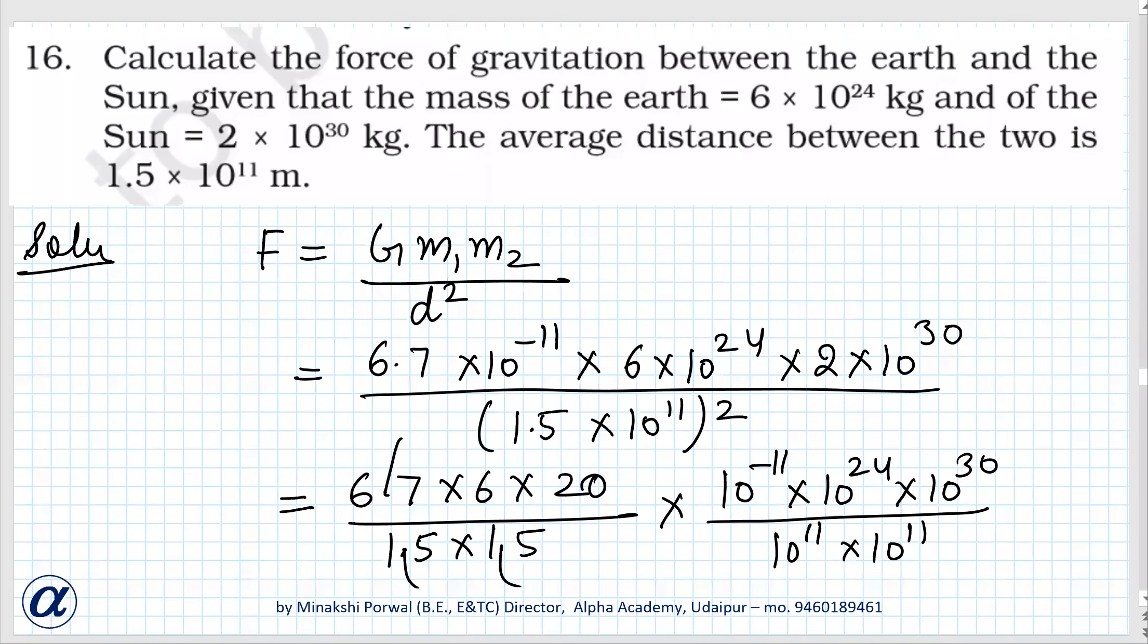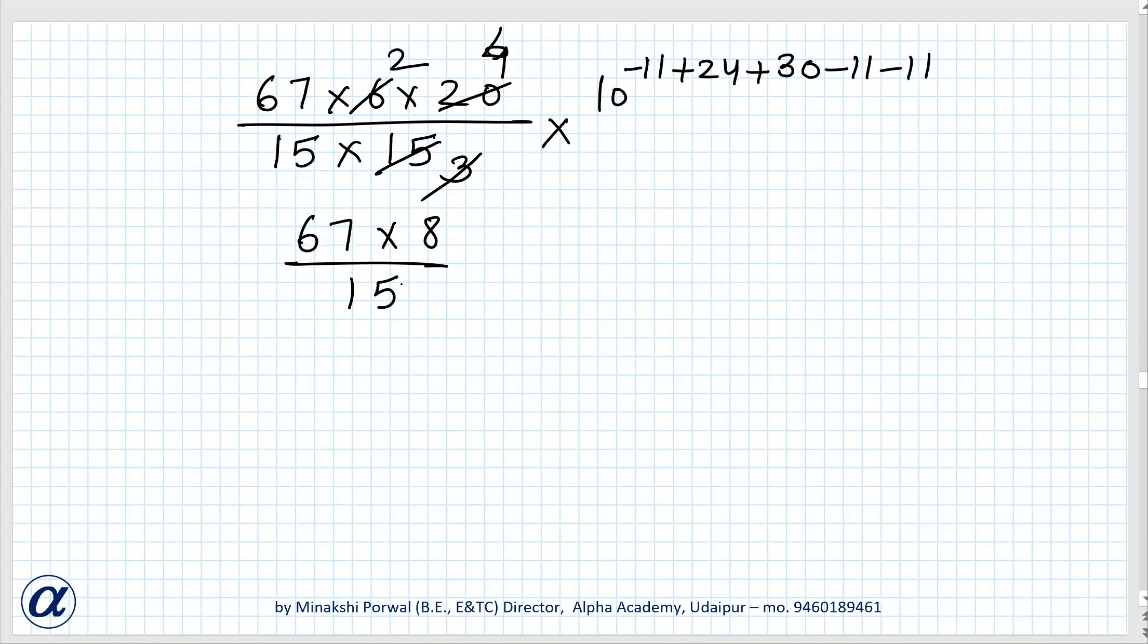10 to the power -11 + 24 + 30 - 11 - 11. By powers and exponents we have studied this in ninth class. 67 × 6 × 2 / 15 × 15. When we will cut by 5, 5 fours are 20, 5 threes are 15, this is two times.